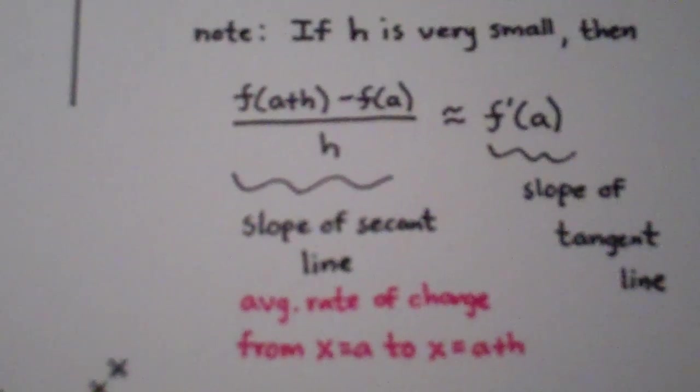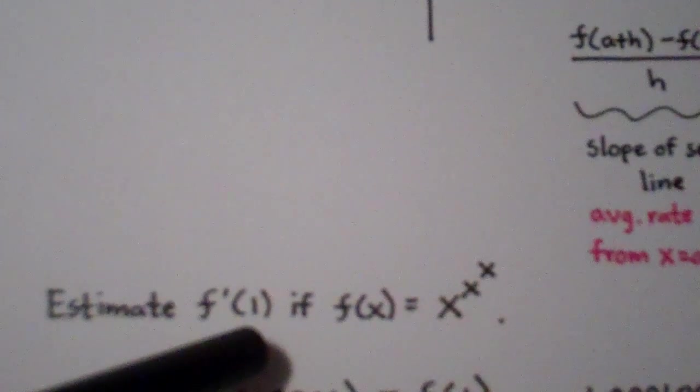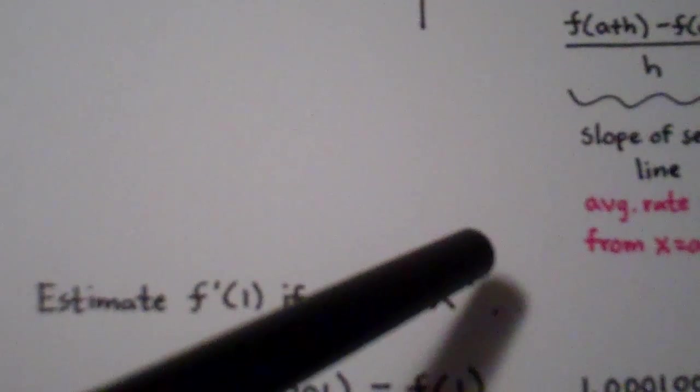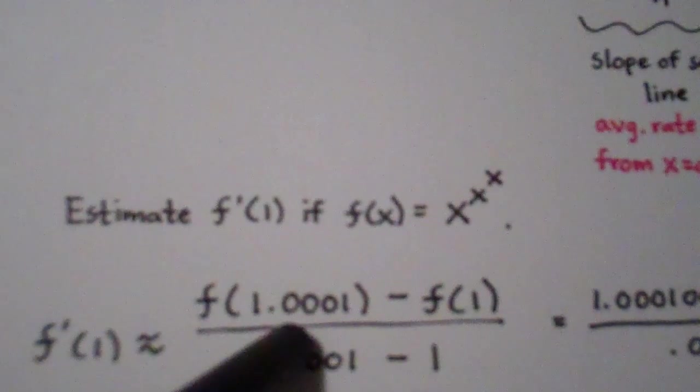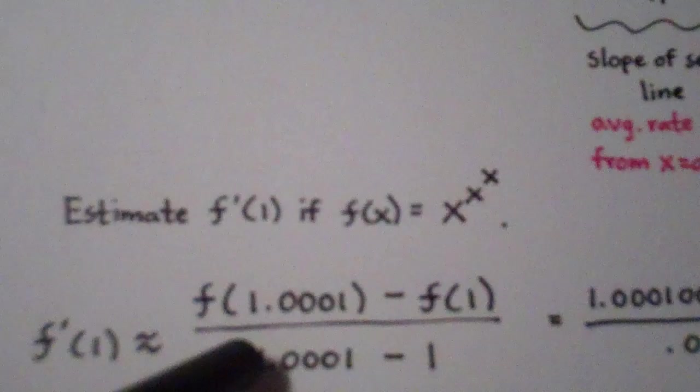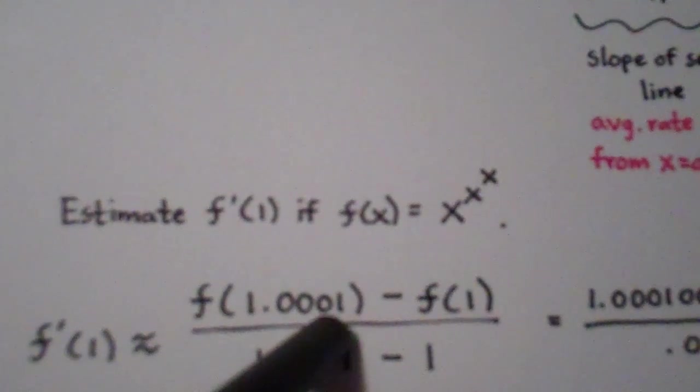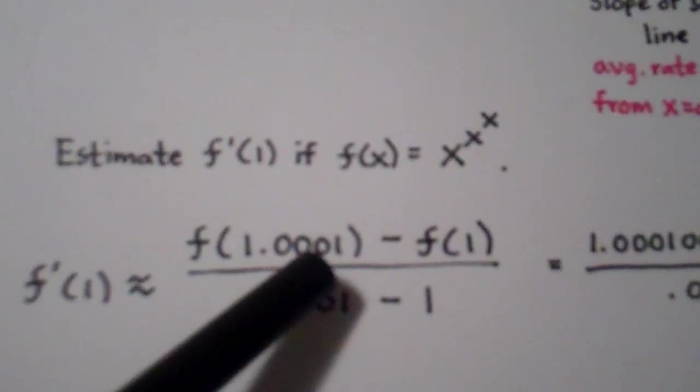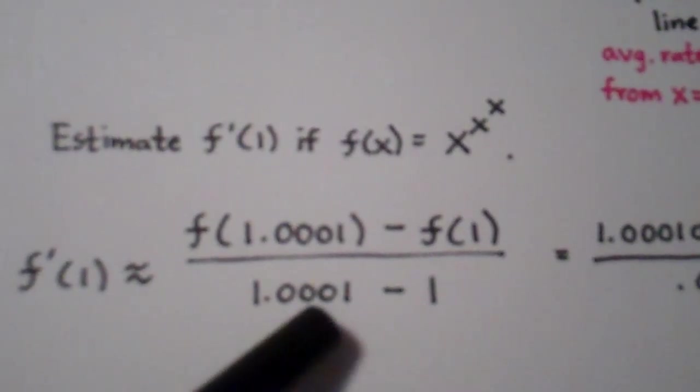So let's actually do that process on the example that we started with. So we wanted to estimate f'(1) if f(x) is equal to x to the x to the x power. So what I did here is I took a point that's just a little bit beyond 1. In this case, I took 1.0001. And I basically found the slope of the secant line or the average rate of change from x equals 1 to x equals 1.0001. So I take the change in the output, which is f(1.0001) minus f(1), and then we divide that by the change in the input, 1.001 minus 1.